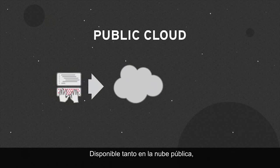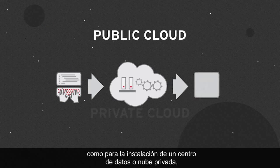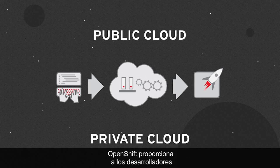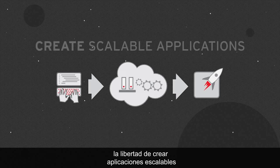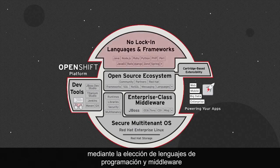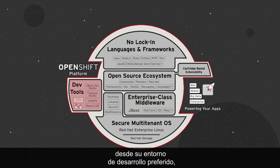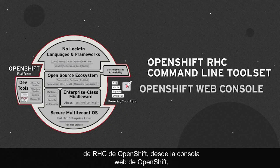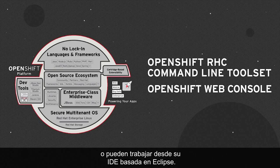Available either in the public cloud or for installation in a data center or private cloud, OpenShift gives developers the freedom to create scalable applications using their choice of programming languages and middleware — from their preferred development environment via OpenShift's RHC command line toolset, from the OpenShift web console, or from their Eclipse-based IDE.